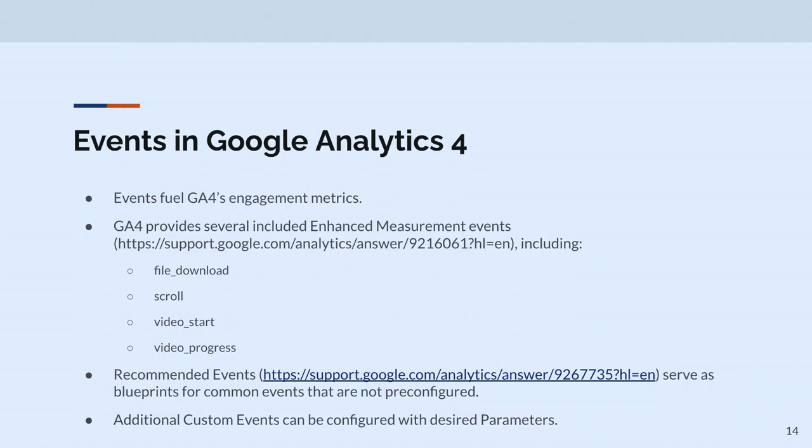They also have a whole library of what they call recommended events — effectively recipes for different events you can configure. You don't have to use those, you can make your own. One recommendation is to use recommended events if you've got a use case that lines up with one, because the conjecture is at some point Google might leverage patterns in recommended events, so you might as well be tracking data in that pattern.